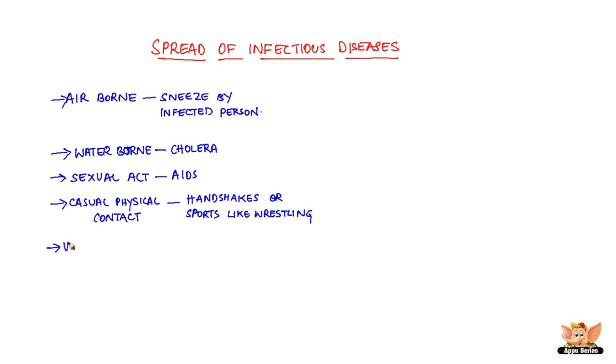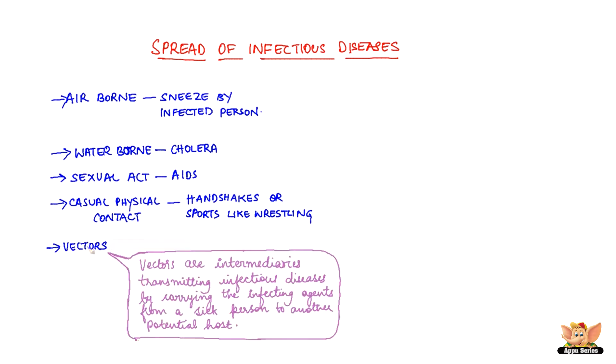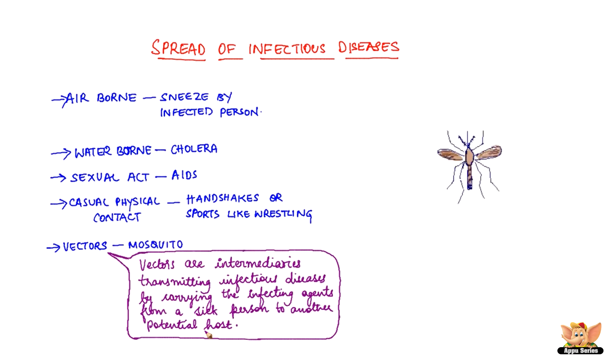Vectors can be the cause of spread of infectious diseases. Vectors are intermediaries transmitting infectious diseases by carrying the infected agents from a sick person to another potential host. Mosquito is an example of a vector. It can carry microbes when it feeds on animal blood, and these microbes are transmitted to human beings when it feeds on human blood. Mosquito as such is not affected by these microbes.